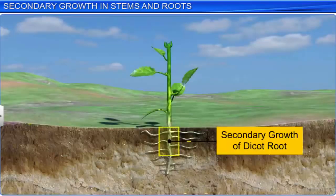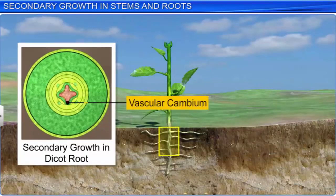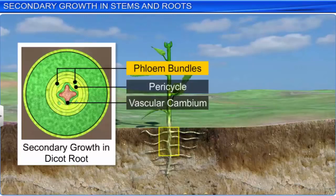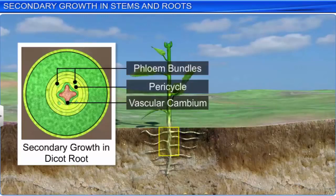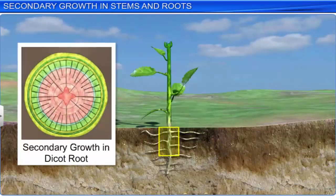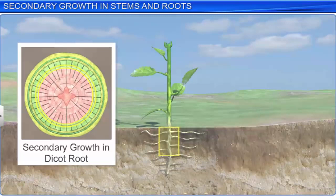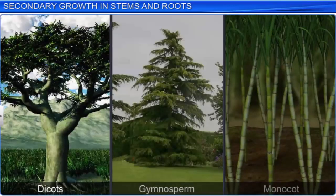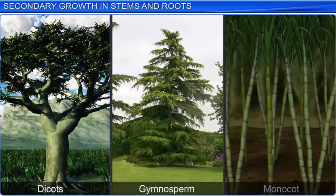Secondary growth in a dicot root is similar to that of a dicot stem. The vascular cambium develops from the pericycle tissue located just below the phloem bundles. Initially, the cambial ring is continuous and wavy, which later grows and becomes circular. Secondary growth of stems and roots occurs mainly in dicots and gymnosperms, while monocots lack secondary growth.